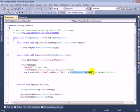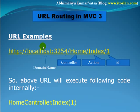Now switch over to our presentation. Here is a URL example: http://localhost:3254 — that is the port, and localhost:3254 may be a domain name — /home/index/1. Home is actually the controller, index is the action, and one is the id that will be called. So the above URL will internally execute HomeController.Index with one as the id.